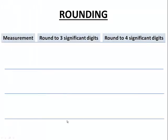We're going to have a measurement, we'll round to three significant digits, and also round to four significant digits. Our first example: 27.258 centimeters. We should first identify the number of significant digits that were given or measured. Here we have all non-zeros, so they're all significant, so we have five.